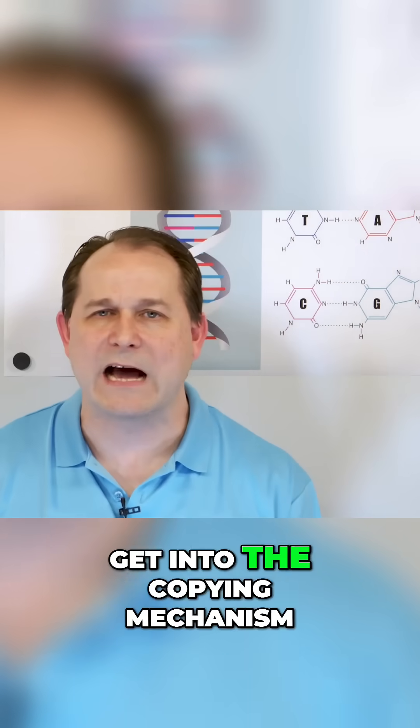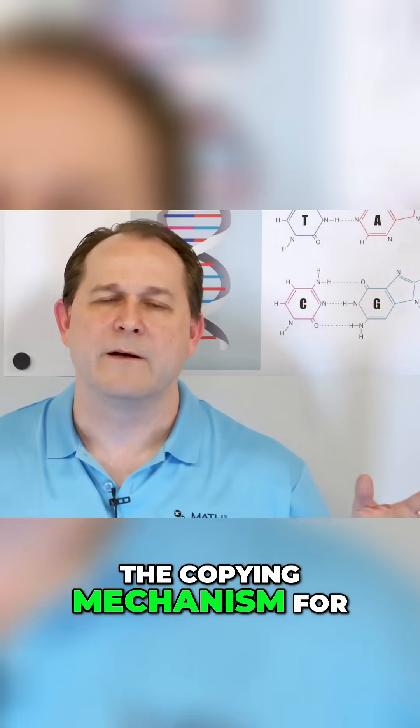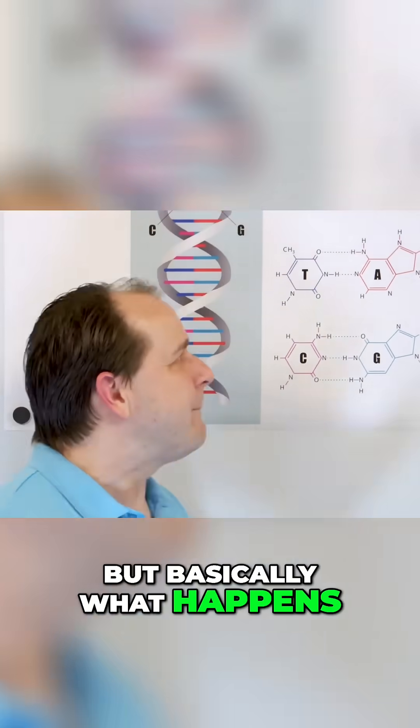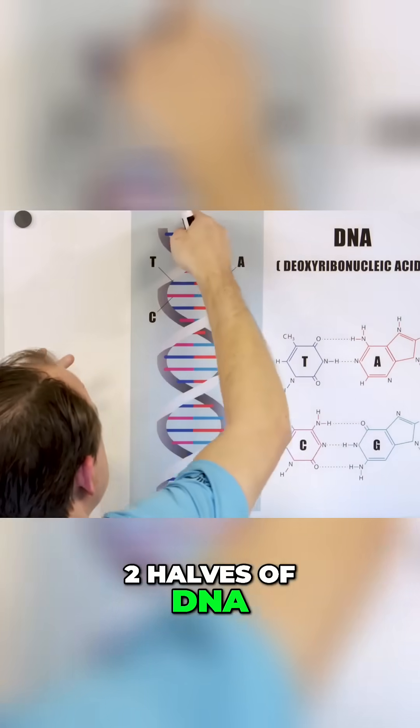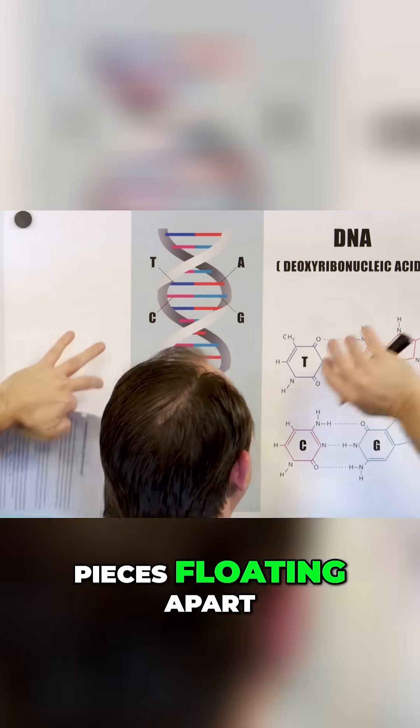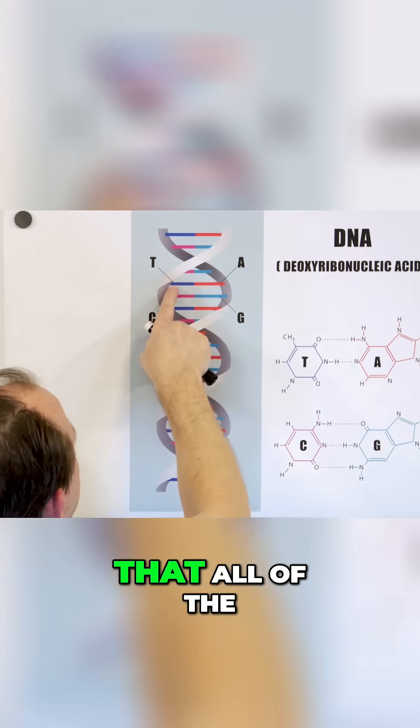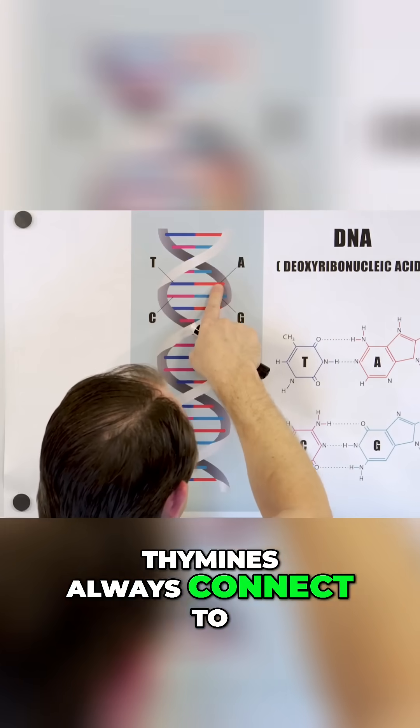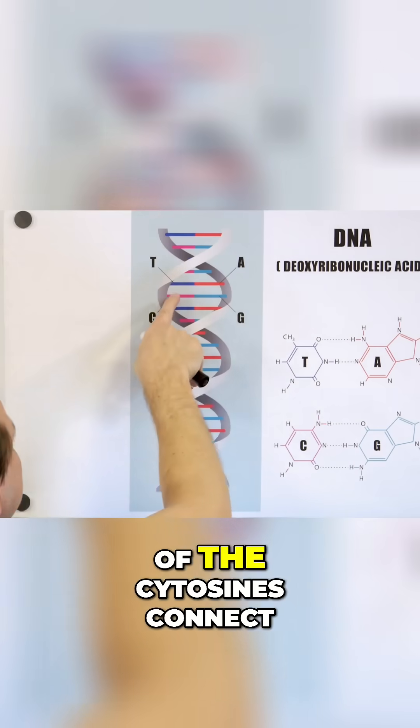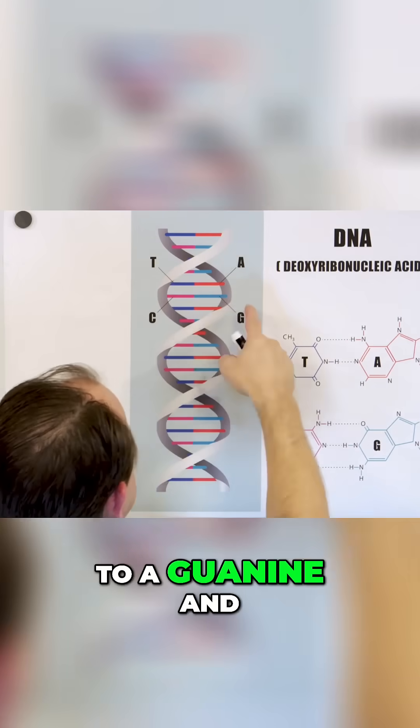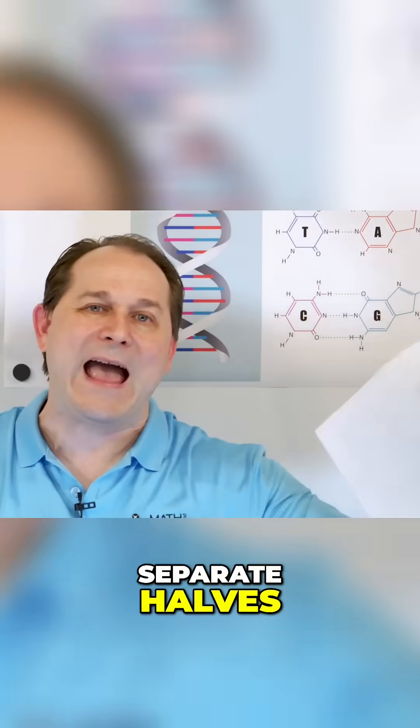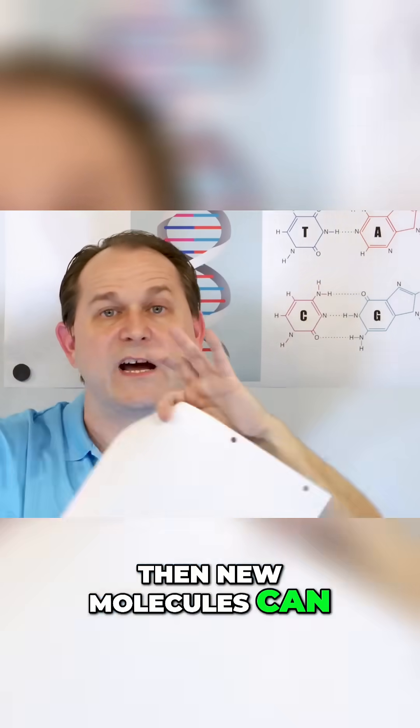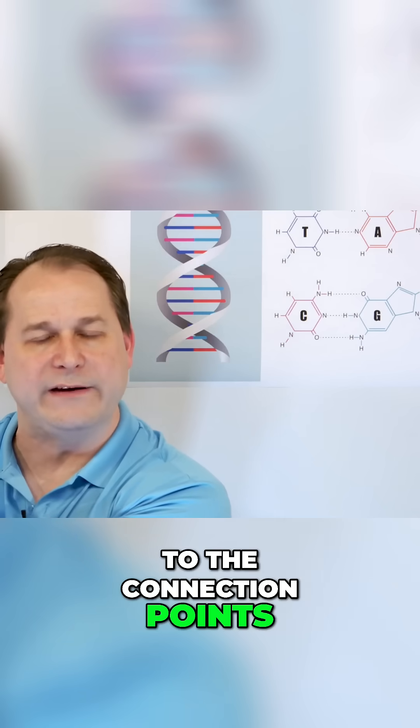We're not going to get into the copying mechanism for DNA - it's quite complicated. But basically what happens is it unzips itself so that you have two halves of DNA. You can kind of imagine these two pieces floating apart. But since we know that all of the thymines always connect to an adenine and all of the cytosines connect to a guanine and the guanines to the cytosine and so on, once the thing unzips and you have two separate halves, then new molecules can come in and connect to the connection points and make two completely new double helix twisted pairs.